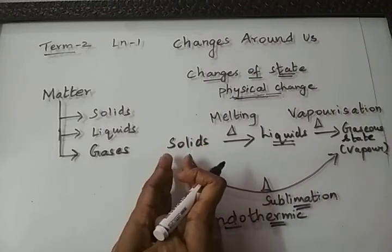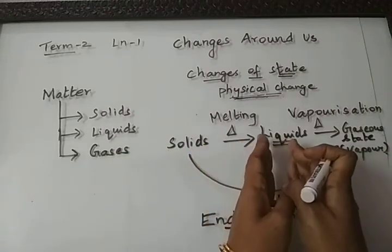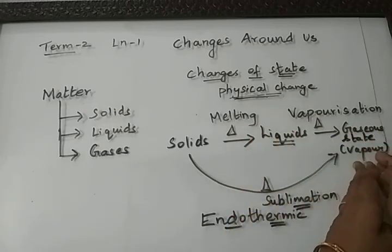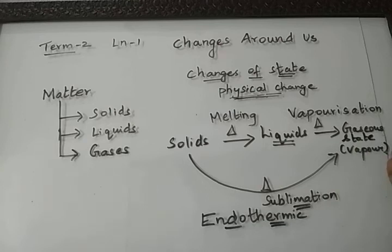Liquids have definite volume but they do not have a definite shape, whereas in gaseous state they neither have a definite shape nor a definite volume. It is because the molecules are very loosely packed; they have more kinetic energy.